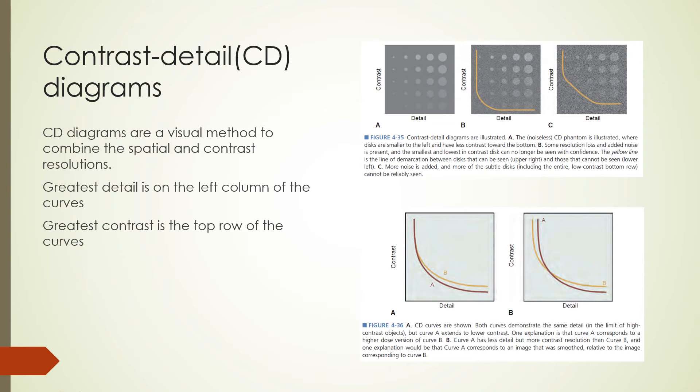If you look at the top figure, as more noise is introduced from figure A to C, less detail is seen as shown by the yellow demarcation line moving to the right. The lines represent the boundaries of what is visible. The bottom figure shows how a contrast detail curve can be used to compare two images in terms of the detail and contrast viewable on each image. In figure A, both systems A and B have the same detail, but A has more contrast than B. In figure B, system B has more detail than system A, but system A has more contrast than system B. The use of the contrast detail curves on this slide represents a qualitative method of describing the relationship between the spatial resolution and contrast resolution. We will see a quantitative method next.